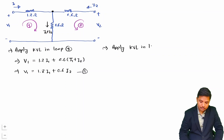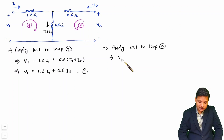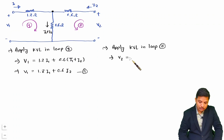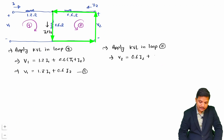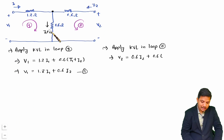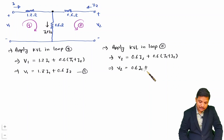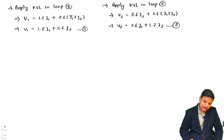Applying KVL in loop 2: V2 equals the voltage across the 0.6 ohm resistor at port 2 (carrying I2) plus the voltage across the central 0.6 ohm resistor (carrying I1 + I2). So V2 = 0.6·I2 + 0.6·(I1 + I2) = 0.6·I1 + (0.6 + 0.6)·I2 = 0.6·I1 + 1.2·I2.